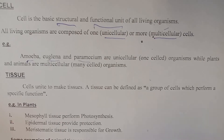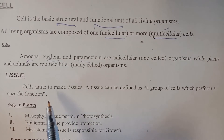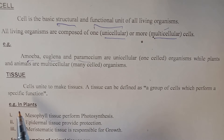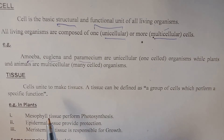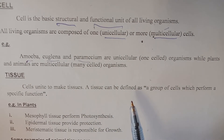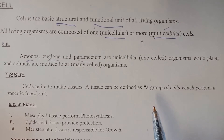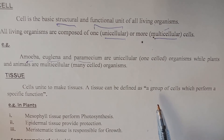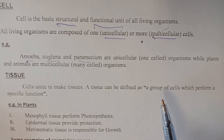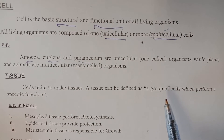Another important term is tissue. Cells unite to make tissue. Tissue can be defined as a group of cells that perform a specific function. Many cells combined together having the same size and structure form tissue. Tissue is made of identical cells or different cells, but the function may be the same.